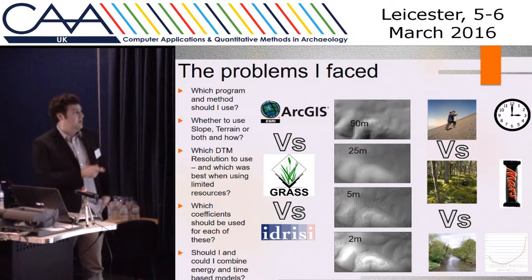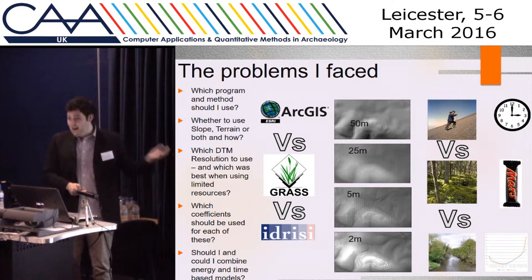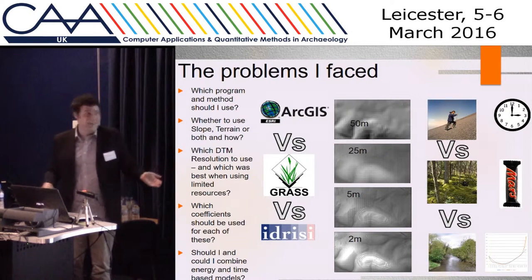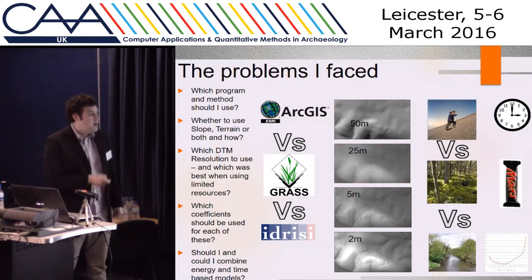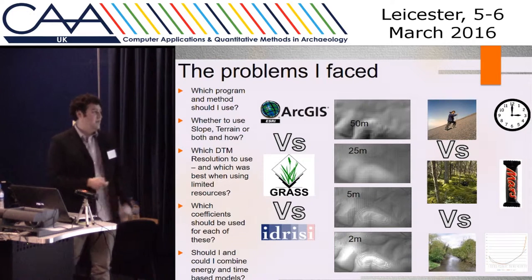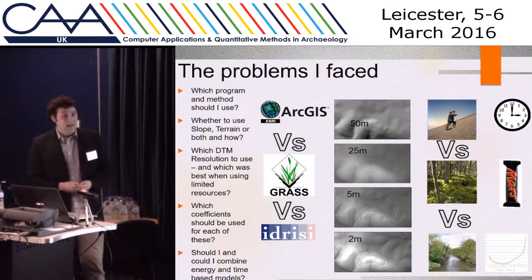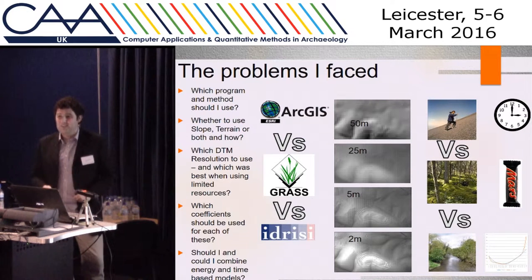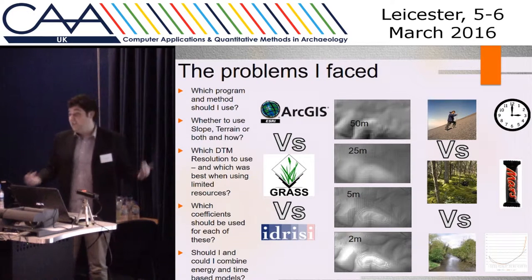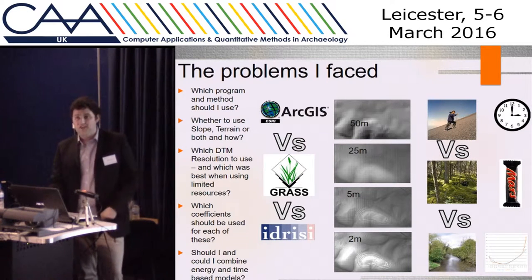Similarly, what raw data should I use — a 50-meter coarse resolution DTM or the best LiDAR data, which covers about 73% of the country? Having made those decisions, I then have the complicated area of deciding what costs I actually want to measure: whether water slows you down or speeds you up, terrain types, how slope affects movement. And once I've chosen those, how do I rate those costs — by how fast you can move across those surfaces, or how much energy they require? Are they essentially the same or different?